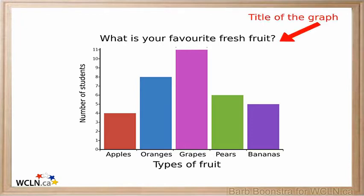The title offers a short explanation of what is in your graph. This helps to identify what you are about to look at. It can be creative or simple, as long as it tells what is in the graph. The title of this graph tells you that the graph is about students' preference in fresh fruit.